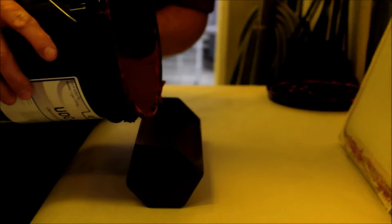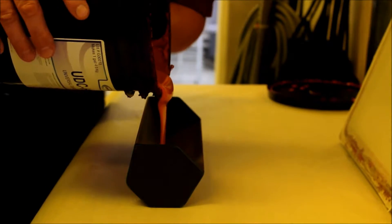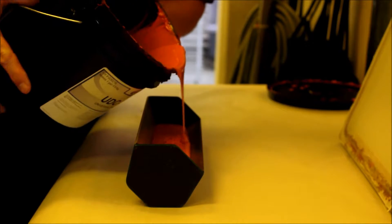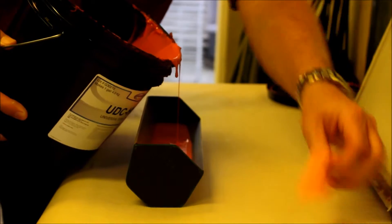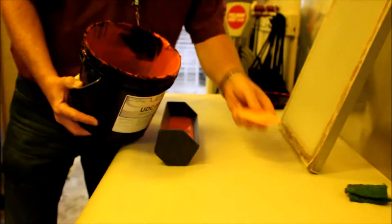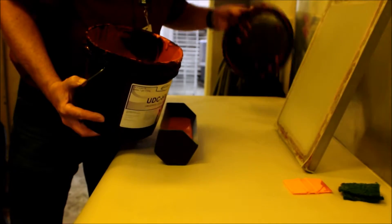So we're going to take our emulsion and pour it into our scoop coater. When we're done, we're going to take our squeegee, scrape off that edge, just like that, and then replace the cover.